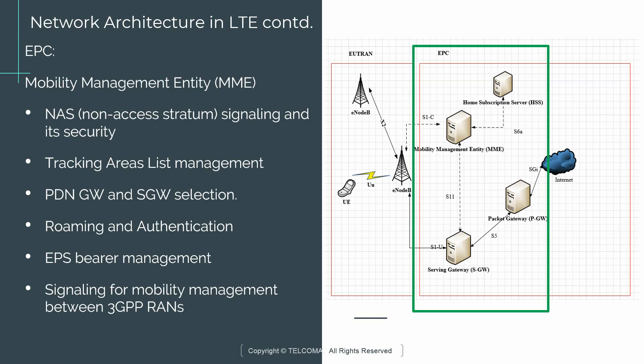Like we talked about in the previous section, before a UE can get service, it needs to go through a bunch of signaling before getting data. That's why the MME is really important — it handles a lot of the control plane functionality. The first function on this list is NAS signaling and its security.